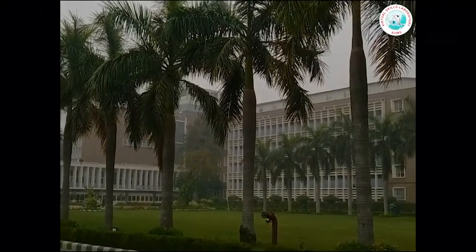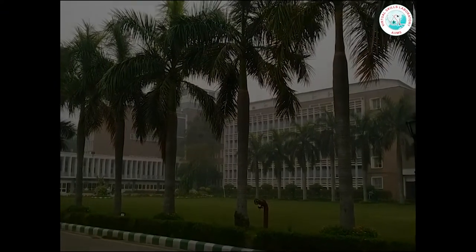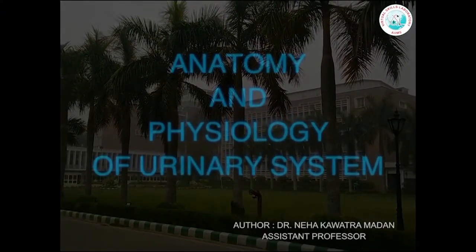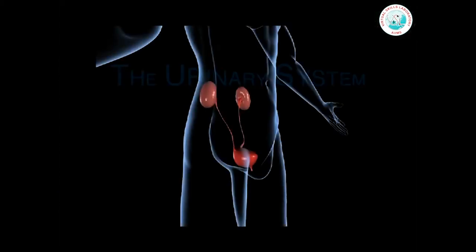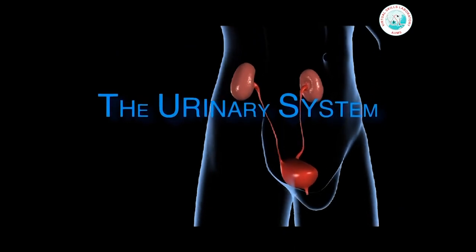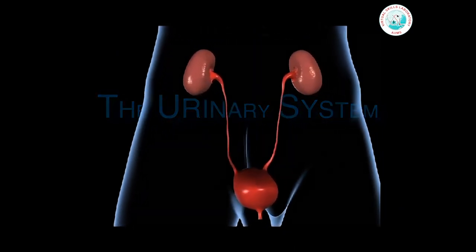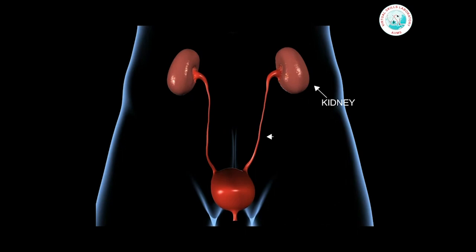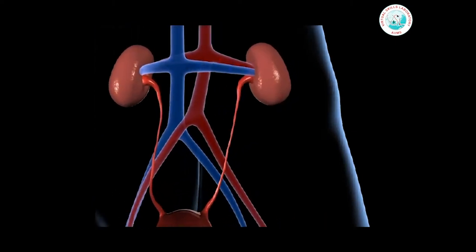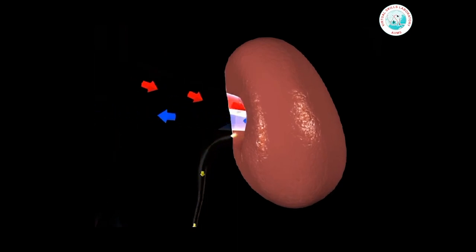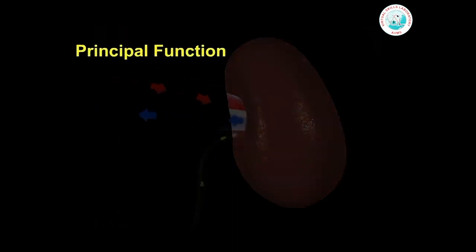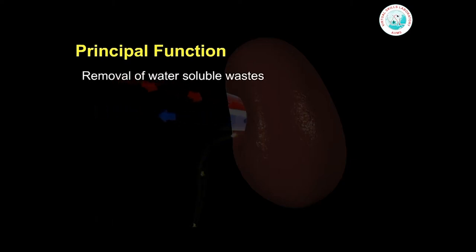A warm welcome to all. This module is designed to help you understand the basic anatomy and physiology of the urinary system. The urinary system is also known as the excretory system of the body. It consists of two kidneys, two ureters, the urinary bladder and the urethra. The kidneys filter the blood to remove waste products and produce urine. The principal function of the urinary system is removal of water-soluble wastes.